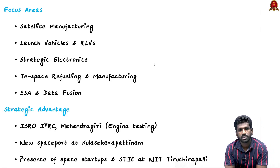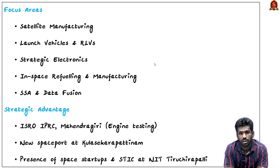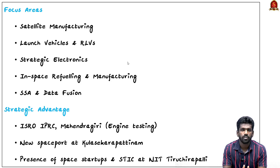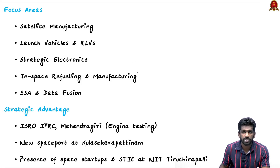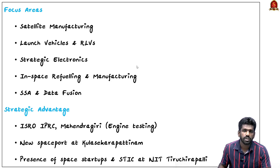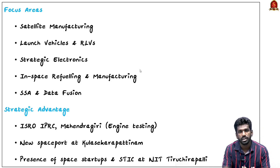Key focus areas include building satellites, launch and reusable launch vehicles, creating strategic electronics, space-grade components, in-space manufacturing, and refueling. These cover both upstream activities like manufacturing and launching, and downstream activities like using satellite data for real-world applications. Tamil Nadu already has strategic advantages: the ISRO Propulsion Complex is located in Mahendragiri in the Tirunelveli district, focused on engine testing and technology development. ISRO is also setting up a new spaceport in Kulasekharapattinam, Thoothukudi — India's second launch site — suited for polar orbit launches.